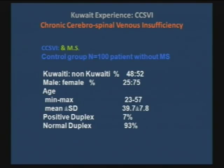After the good people of the MS Society in Kuwait came with the evidence and asked us for help, we said we're going to look into this first. We decided to scan patients and see whether there is any relationship between CCSVI or venous narrowing and MS. We took 100 patients as a control group, and found that 93% of these normal, non-MS patients had a normal duplex — only 7% had a positive duplex.